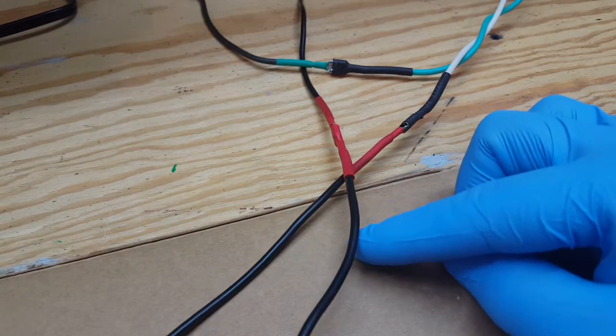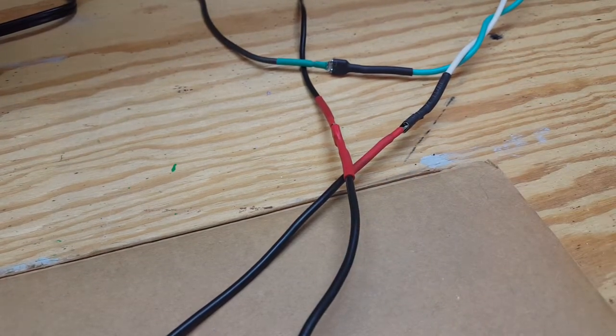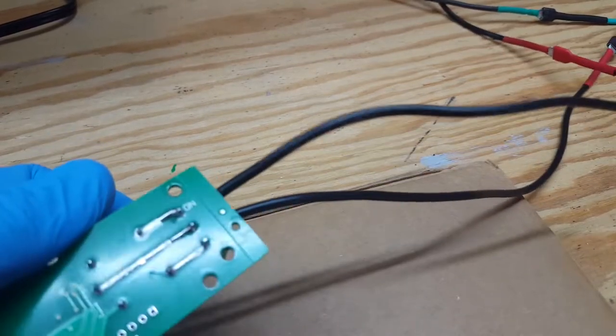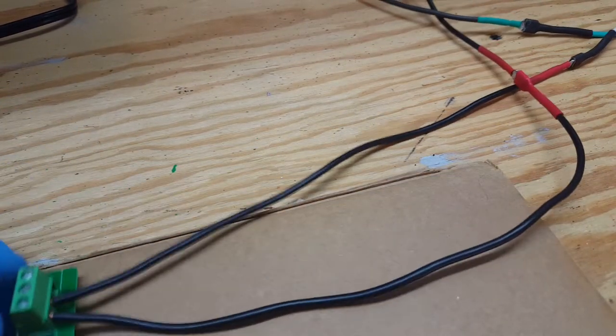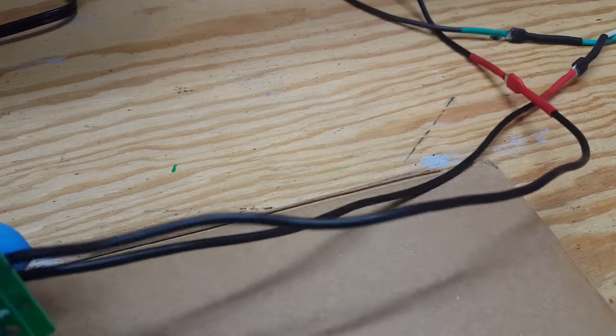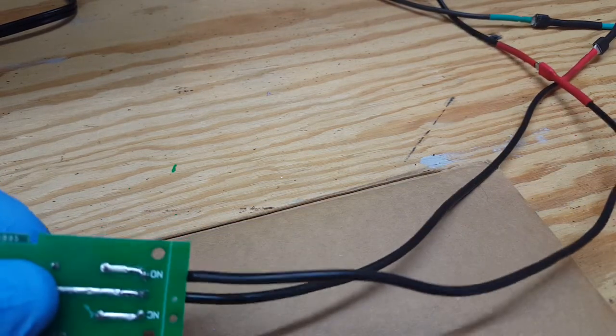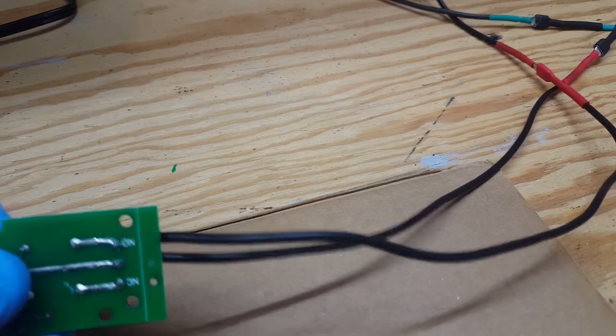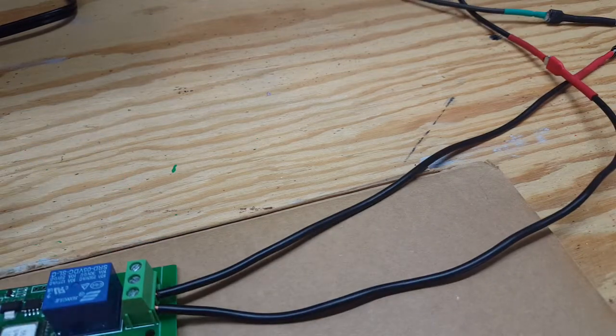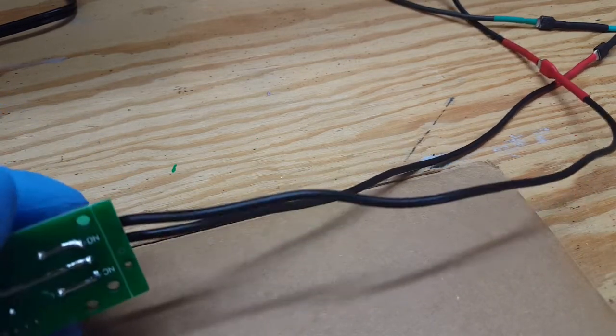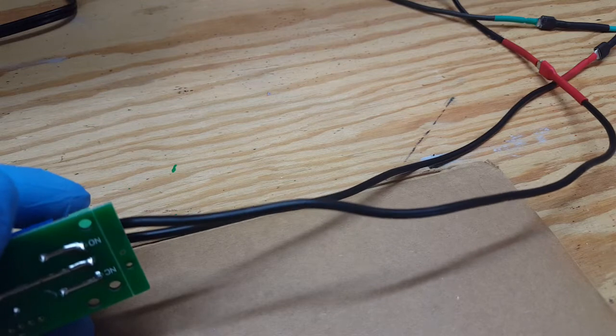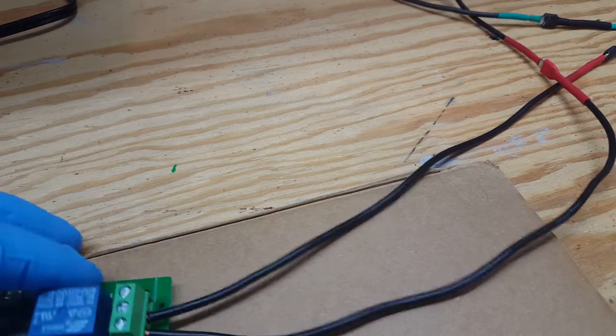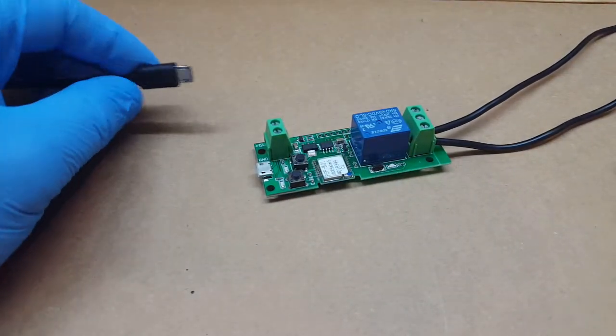Then the power coming from the power supply goes to the common on the relay. Then I have the horn hooked into the normally open, since we want it open until we tell the relay to close so the horn will blow.